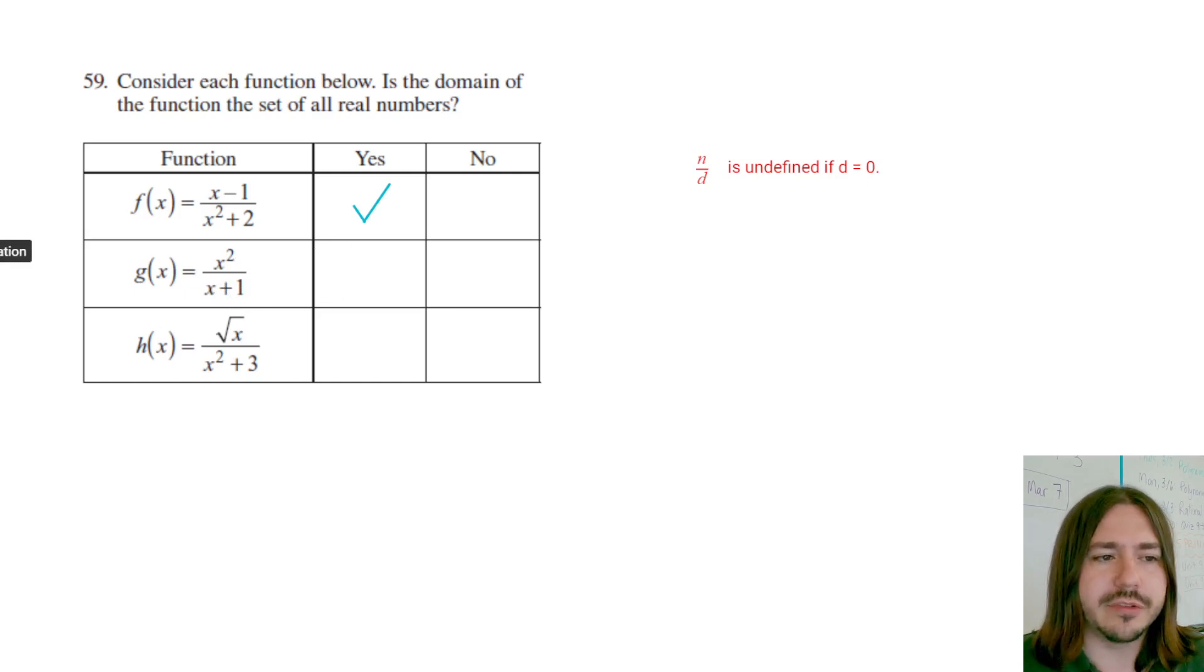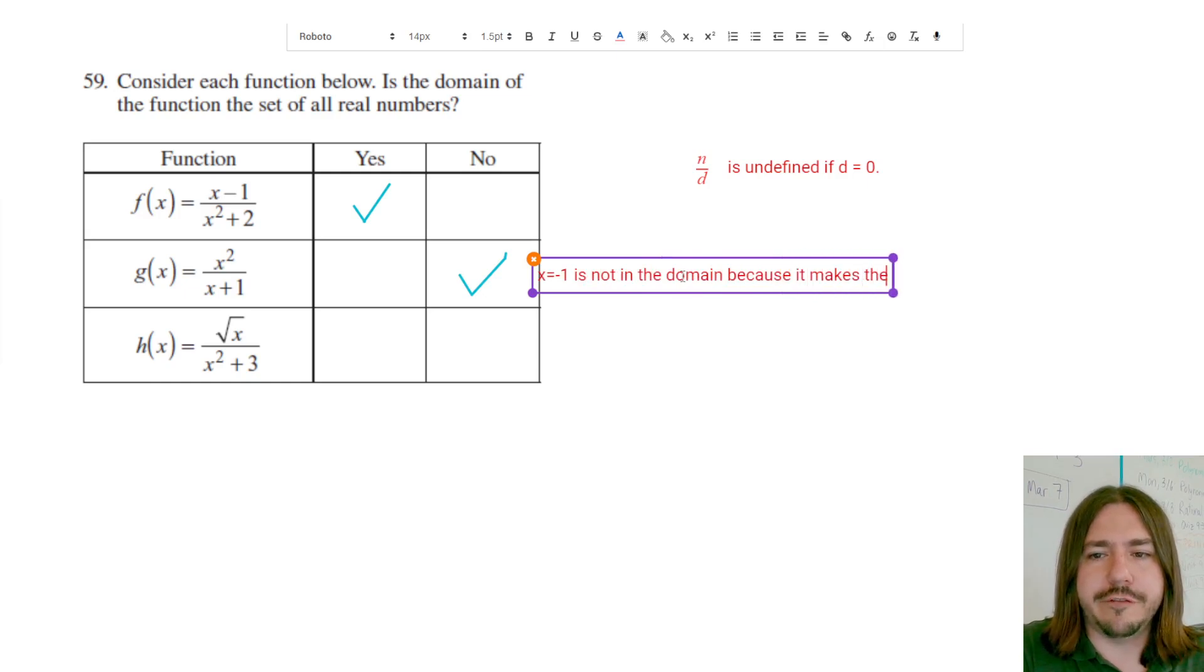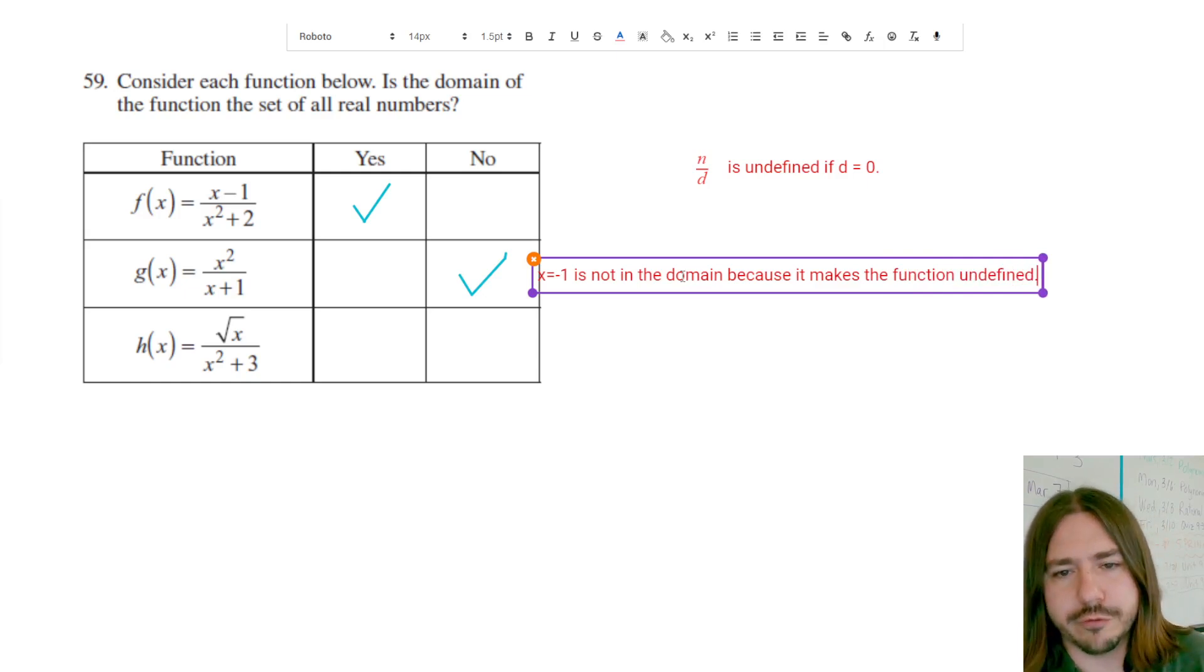Since we can't divide by zero, it's undefined, it has no value. Then the domain is not going to be all real numbers. It's going to be basically all real numbers except for negative one. X equals negative one is not in the domain because it makes the function undefined.